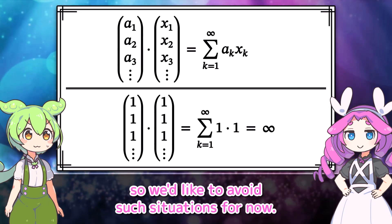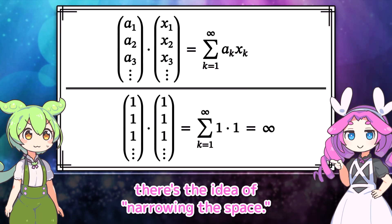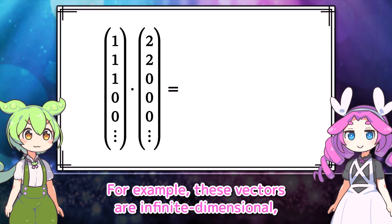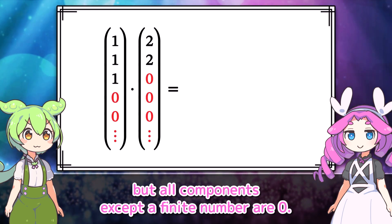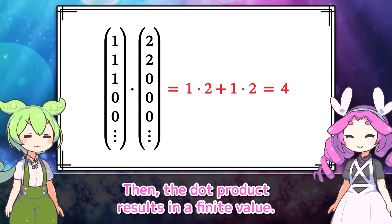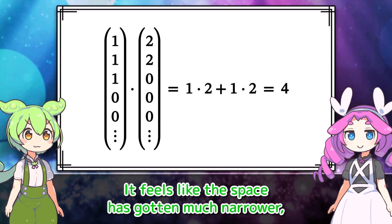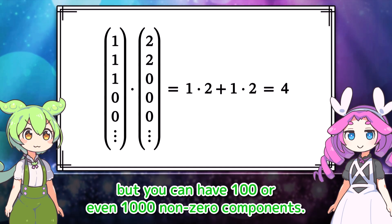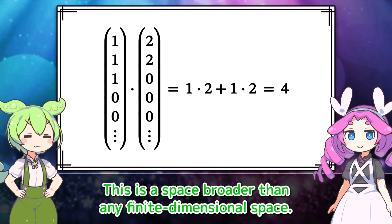One might consider accepting these as valid results, but in a sense it would mean the calculation isn't viable. So we'd like to avoid such situations for now. As a simple method to avoid this, there's the idea of narrowing the space. For example, these vectors are infinite-dimensional, but all components except a finite number are zero. Then the dot product results in a finite value.